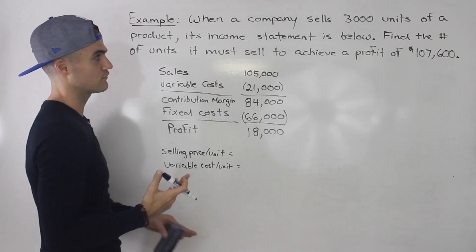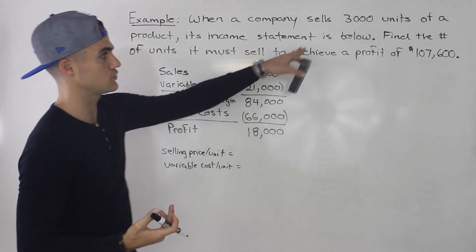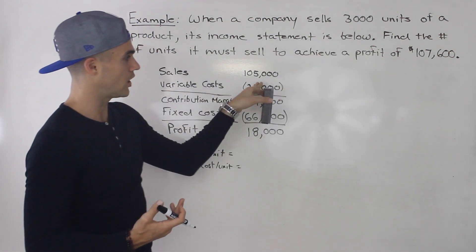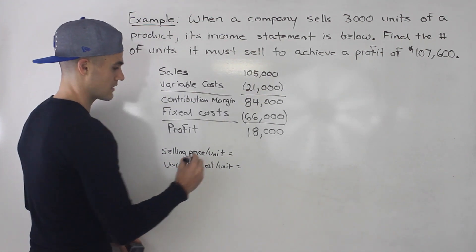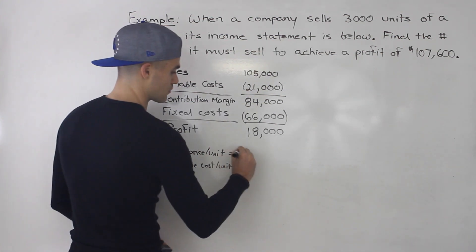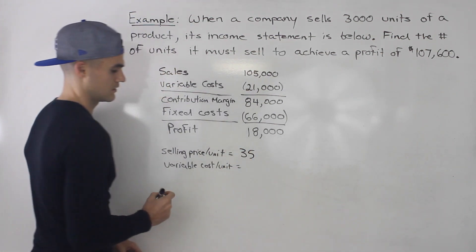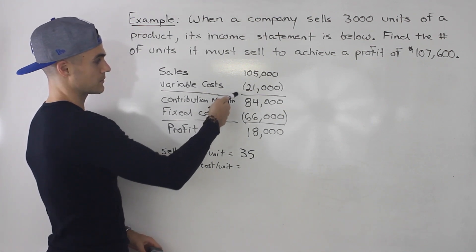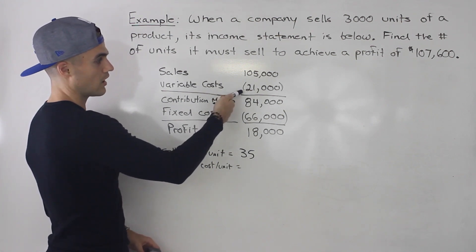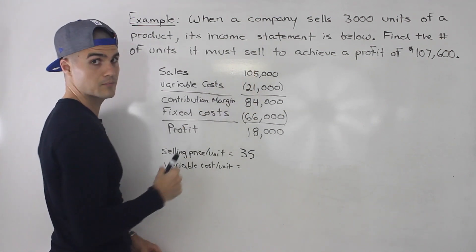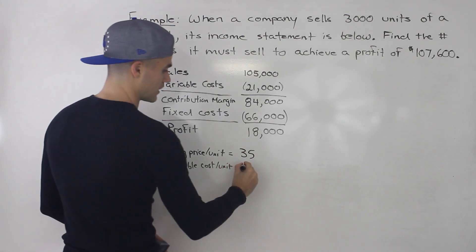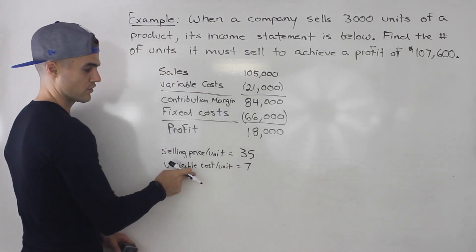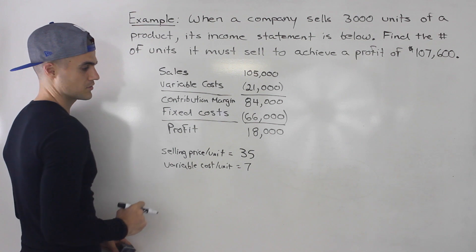If the total sales is $105,000 when you sell 3,000 units, then $105,000 divided by 3,000 gives us $35 — that's the selling price per unit. If we do the same thing with the variable cost, total variable cost divided by the production level gives us $7 per unit for the variable cost per unit.